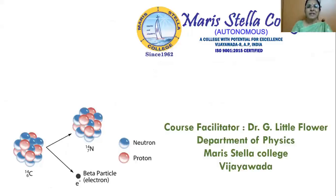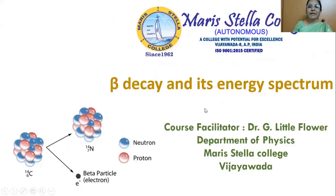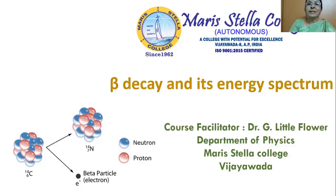Hello viewers. I am very pleased to welcome you all to another lecture on Beta Decay and its Energy Spectrum. Nuclear physics is a fascinating and very interesting subject. A radioactive nucleus loses its energy by giving out some radiations — such a nucleus is said to be radioactive and this process is called radioactivity or radioactive decay. When a nucleus decay takes place, it could give out alpha particles, beta particles, or gamma particles. Today, let us discuss beta decay and its energy spectrum.